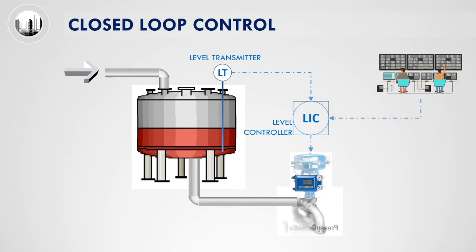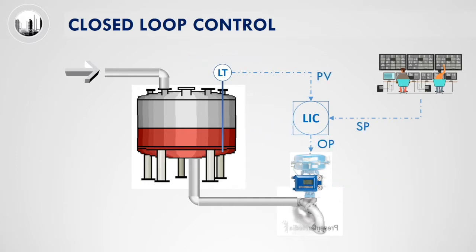LIC sends output to the control valve to control the control valve opening. In process control terminologies, the current process variable is PV, set point is SP, and output is OP.